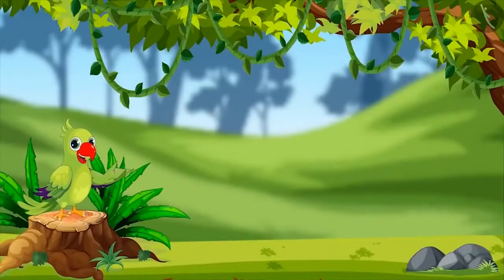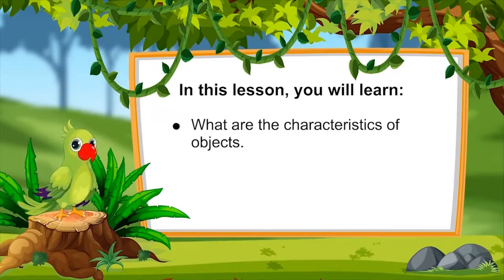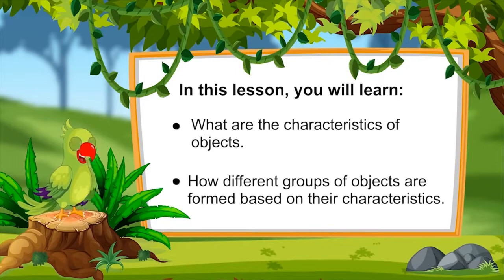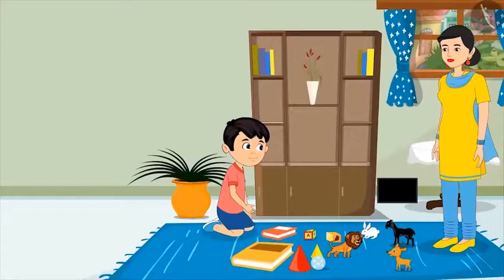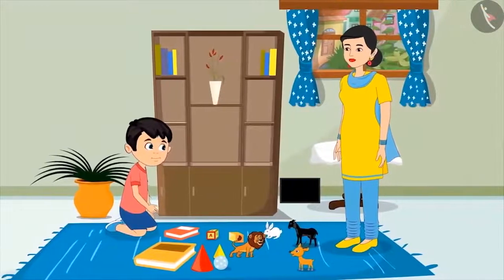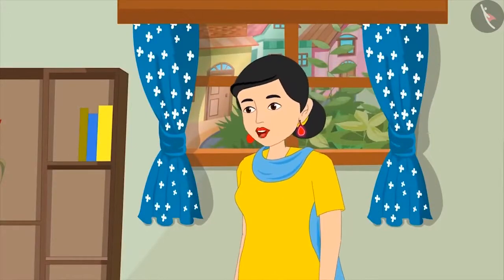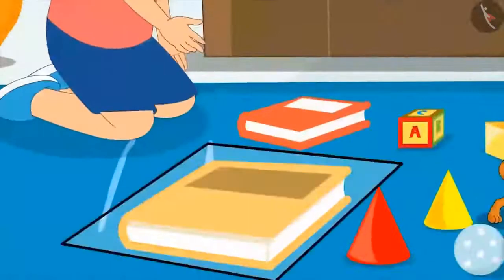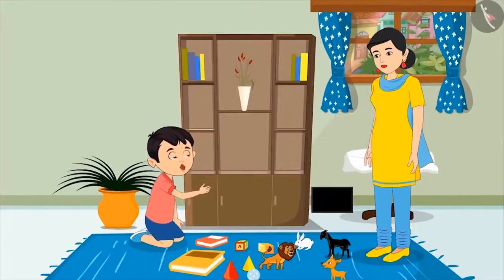Hello friends, I am a parrot — welcome to this lesson. Let us see what you will learn: what actually are the characteristics of objects, and how different groups of objects are formed based on their characteristics. Come on, let us go to Chotu's house. Chotu has just entered the first grade and his mother is helping him keep his new books and toys in the cupboard. His mother said, 'Chotu, keep both your books according to their size — keep the big book at the bottom and the small book on it.'